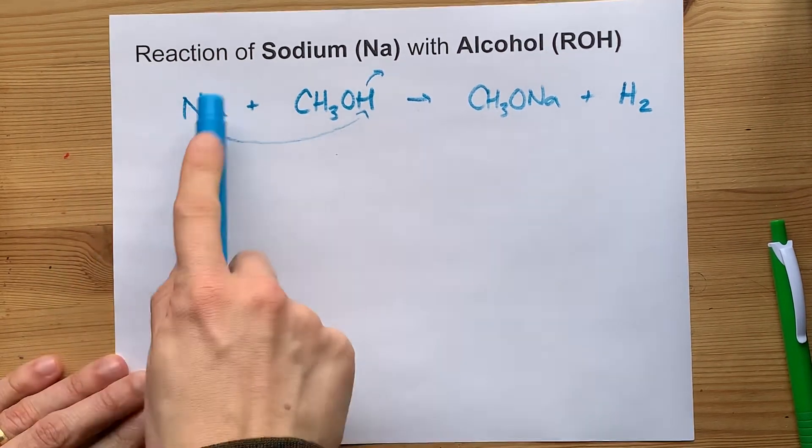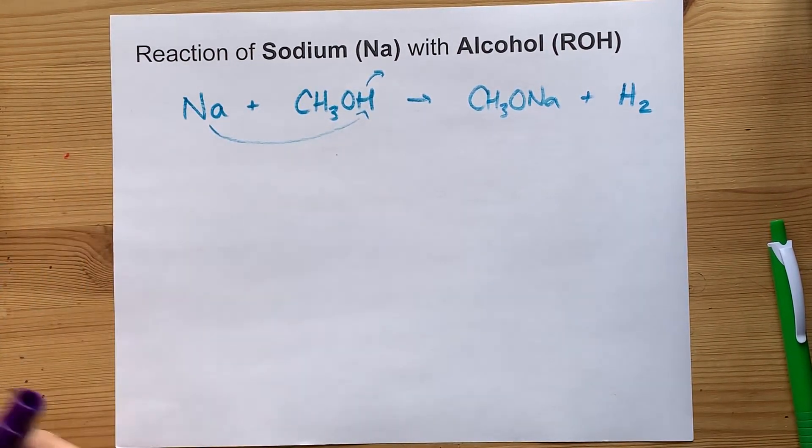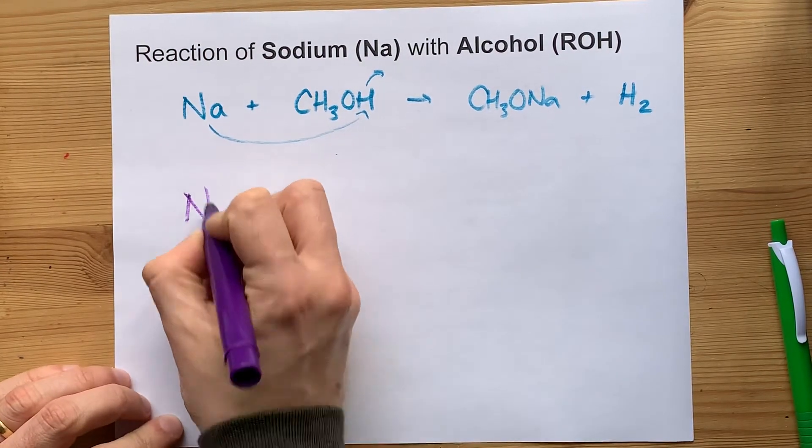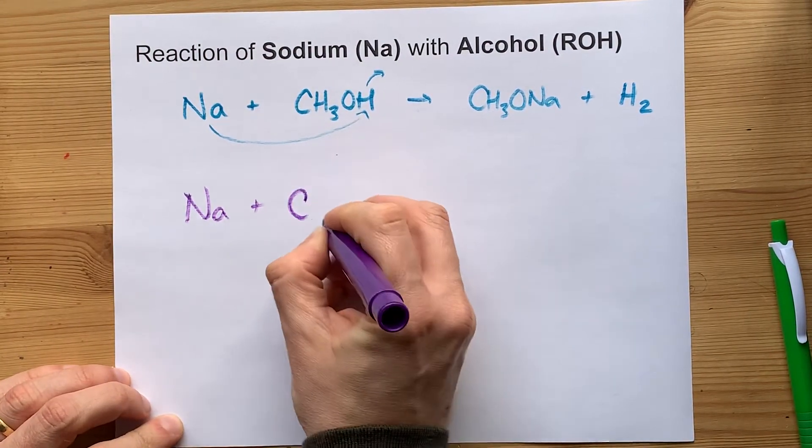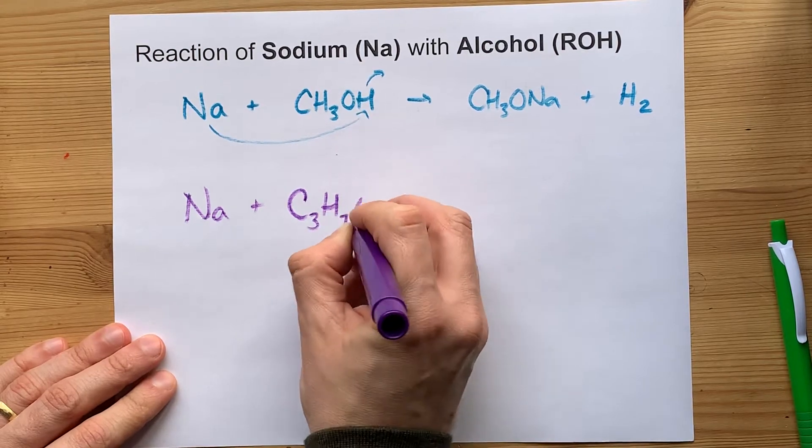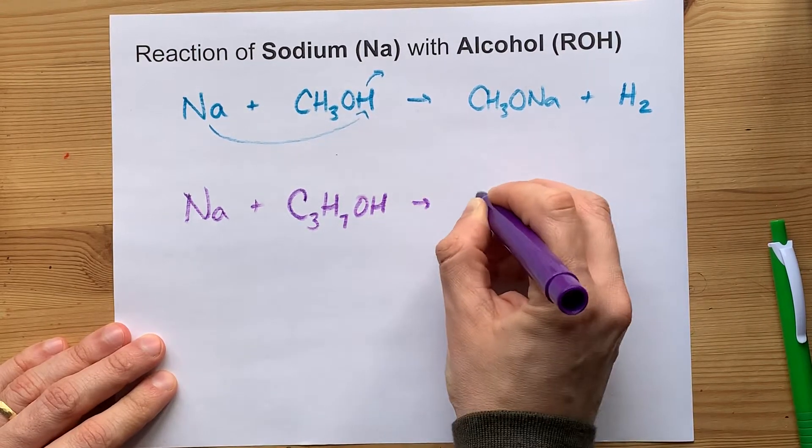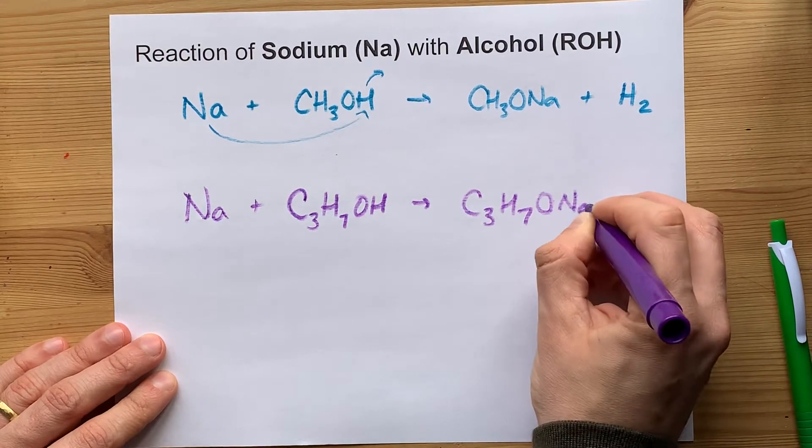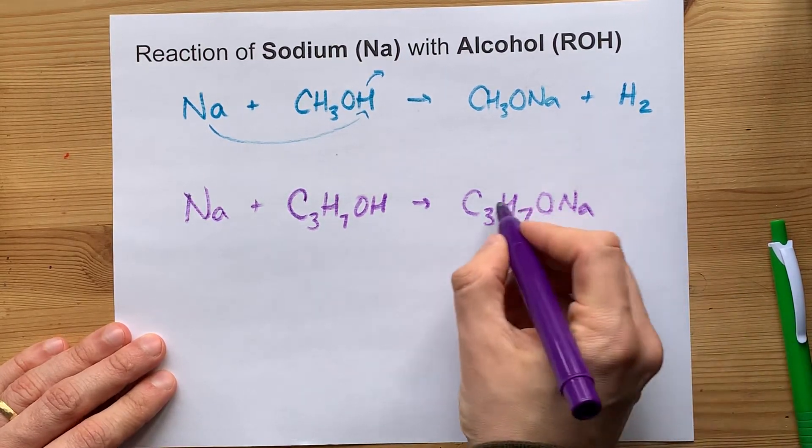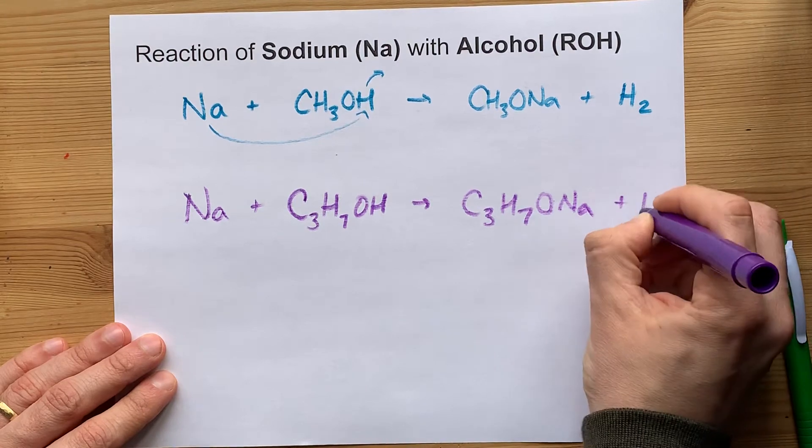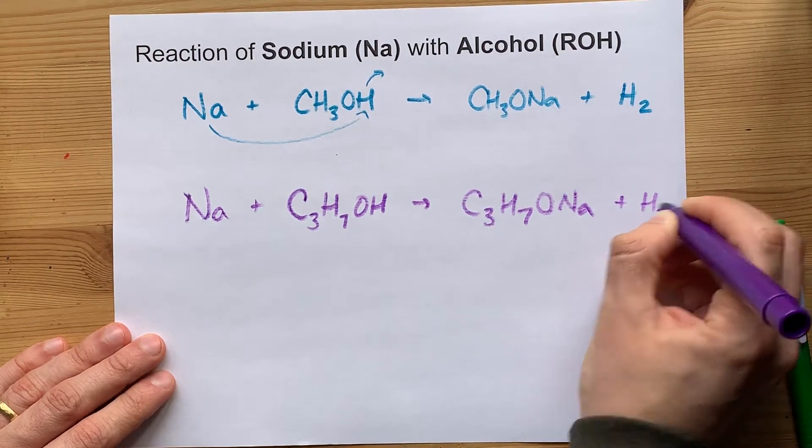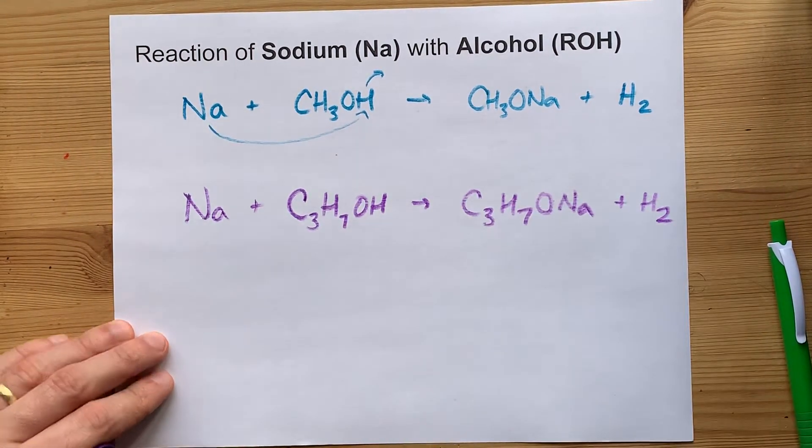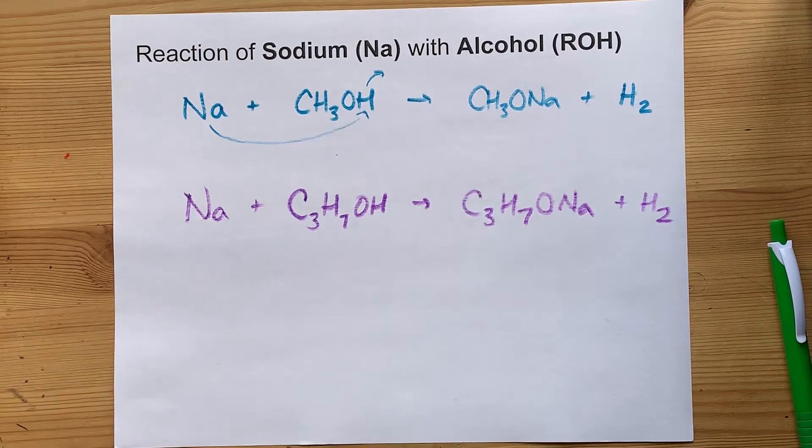So this works for almost any primary alcohol. If I was going to react sodium with, say, propanol, that's C3H7OH, I'm simply going to end up with C3H7ONa, sodium propoxide. And the hydrogens that were kicked out of the original alcohol molecule are given off as hydrogen gas.